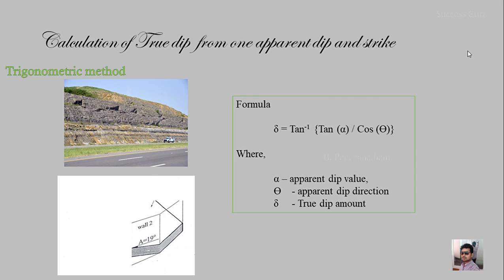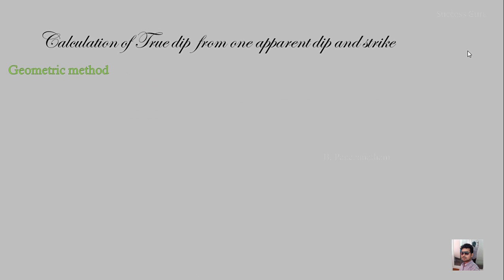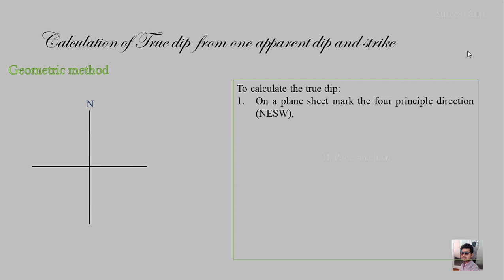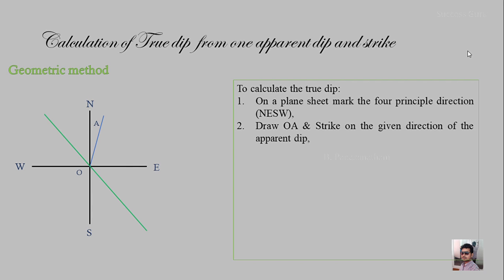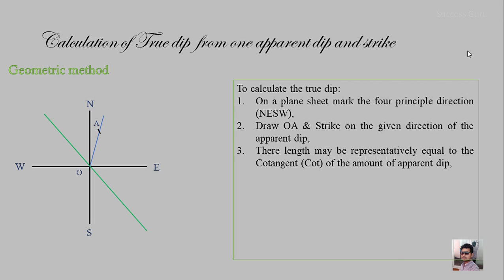The same calculation can also be done using the geometric method. To begin, take a plane sheet and mark the four principal directions — North, East, South, and West — which are mutually perpendicular to each other. The next step is to draw OA, the apparent dip direction, and then draw the strike direction as a line passing through OA. In the third step, measure the cotangent value of the dip amount.